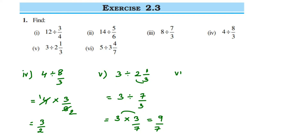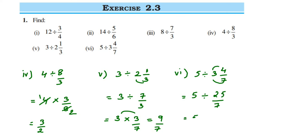Sixth problem: 5 divided by 3⁴⁄₇. First convert the mixed fraction to an improper fraction: 3 times 7 is 21, plus 4 is 25, so it becomes 25/7. Now divide: first number remains the same, division becomes multiplication, reciprocal of 25/7 is 7/25. Cancel: 5 ones are 5 and 5 fives are 25, so this equals 7/5.